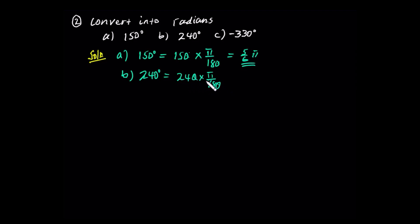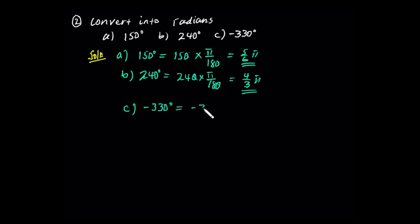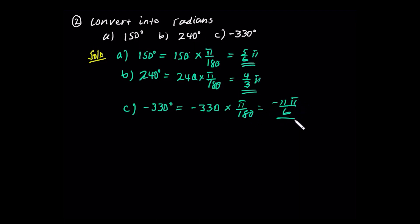240 degrees is equal to 4 over 3 pi. What are the major values in terms of pi? Now for negative 330 degrees: negative 330 is equal to negative 330 times pi over 180. Simplifying, we get minus 11 pi over 6.